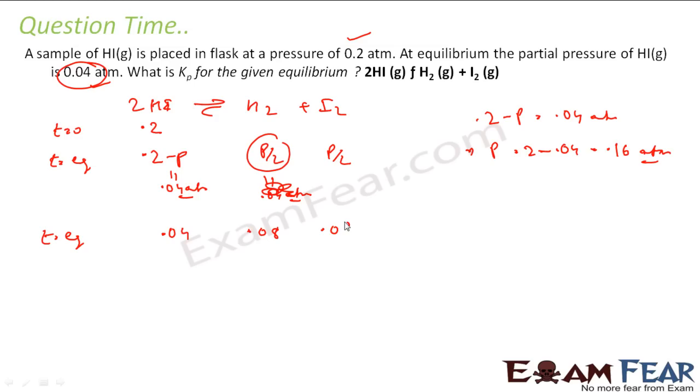Partial pressures are all in atm. Now write Kp. Kp is what? Partial pressure of H2, partial pressure of I2, by partial pressure of HI to the power 2.